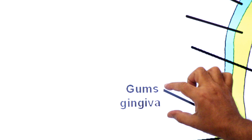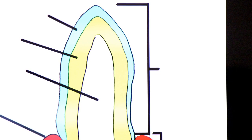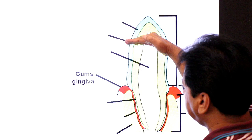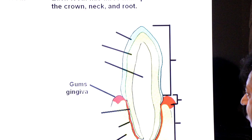Here you see the gums — soft tissues. Dear students, gums are also known as gingiva. Gums are soft tissues that surround the neck region. The part above the gums is called the crown, and the part below the gums is called the root.